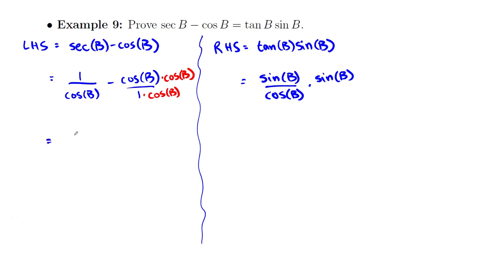So I've got 1 over cos(B) minus cos²(B) over cos(B).